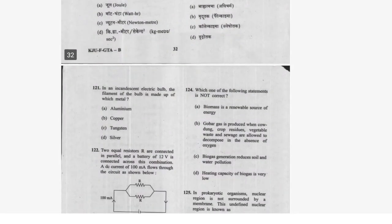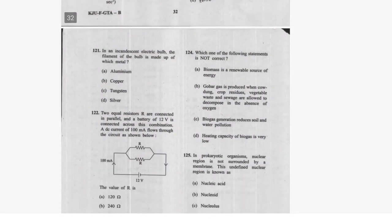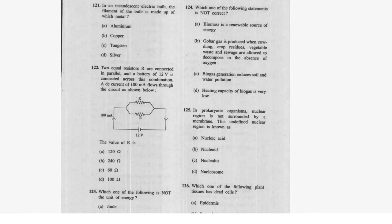Question 111: Which country does not have direct access to the sea or ocean? Armenia — option D is correct. Question 112: In an incandescent electric valve, the filament is made of which metal? Tungsten — option C is correct.